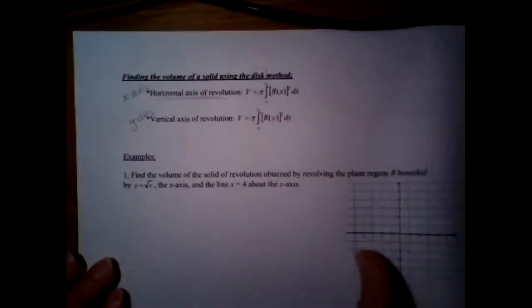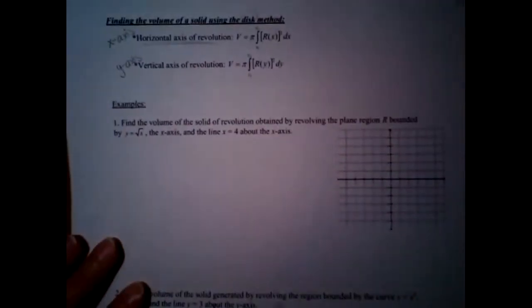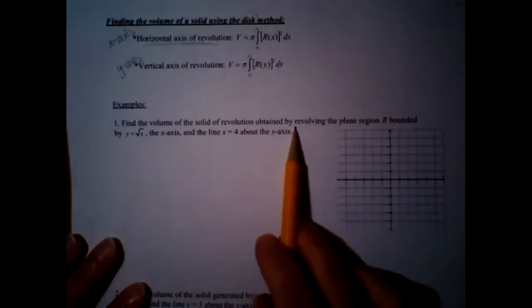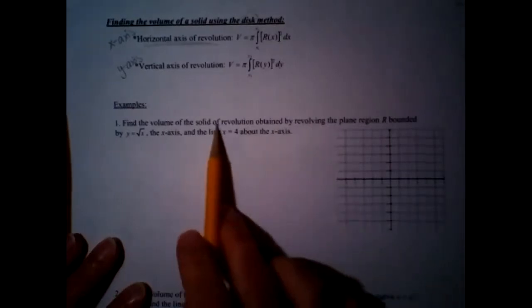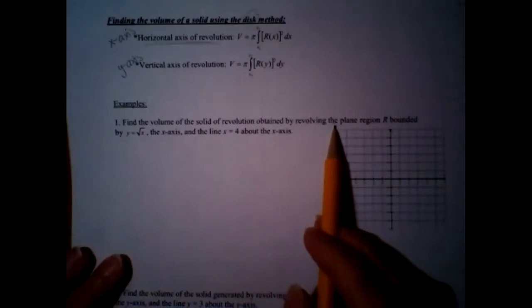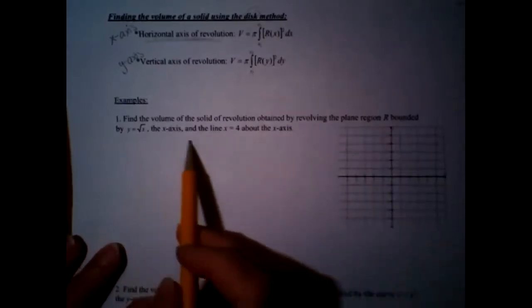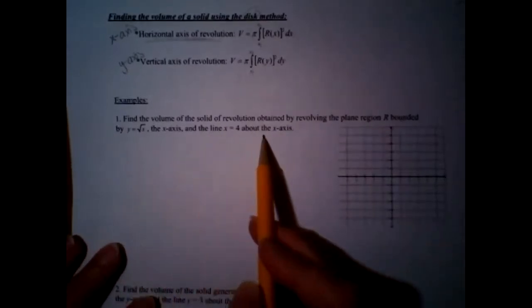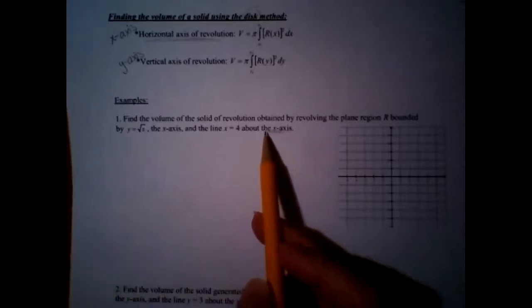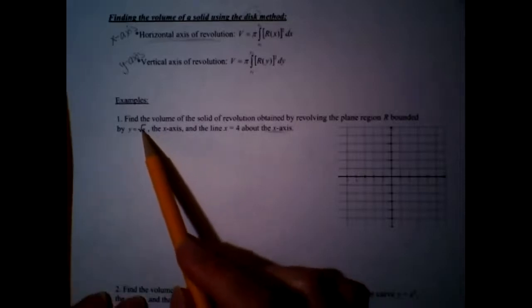That's why it's called the disk method. We're just going to practice a bunch of these. Find the volume of the solid of revolution obtained by revolving a plane region bounded by these graphs around the x-axis. So it's going to be a dx problem. Let's go ahead and graph these functions and see what it looks like.